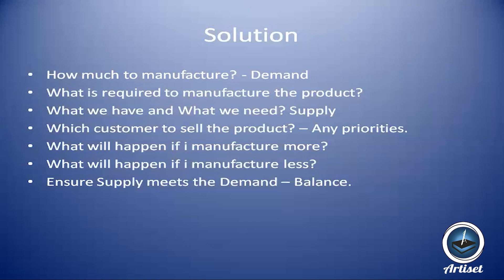What is required to manufacture the product has already been discussed — raw materials and procurement. For what we have versus what we need: we have 100 units in stock for the cold drink company, so we need 400 more. Supply planning ensures the demand is met — we need to manufacture, procure from an external vendor, and use whatever is in stock.